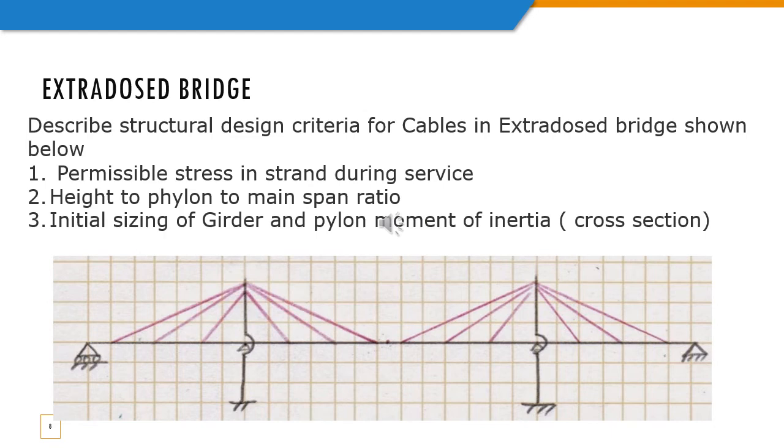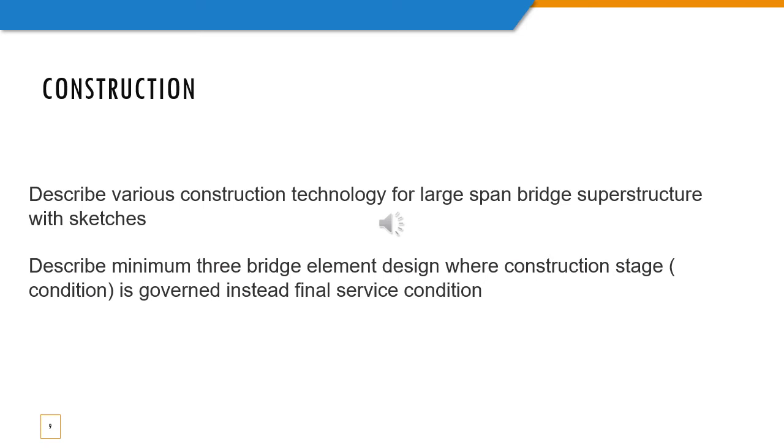The gap between balanced cantilever and cable stay bridges is filled nowadays by extradosed bridges. They are aesthetic, cost effective and fast to build. Few questions on design of extradosed bridges. Describe structural design criteria for design of cables in extradosed bridge shown in figure below. Permissible stress in strain during service. Height of pylon to main span ratio. Initial sizing of girder and pylon moment of inertia. Finally question on construction.